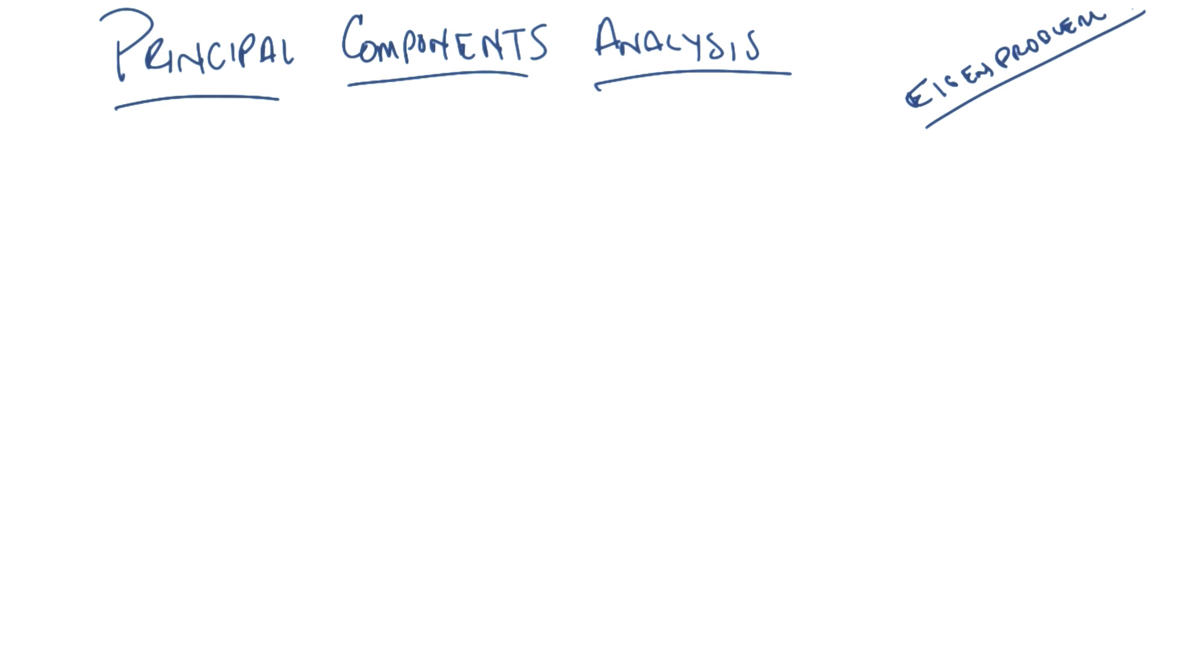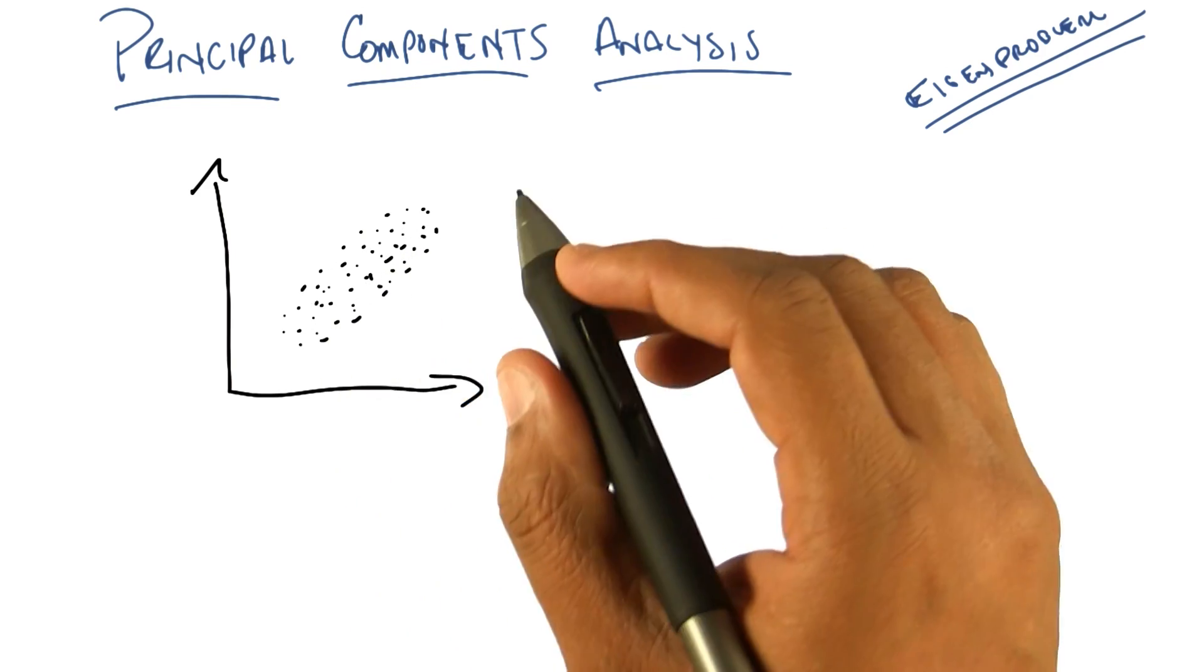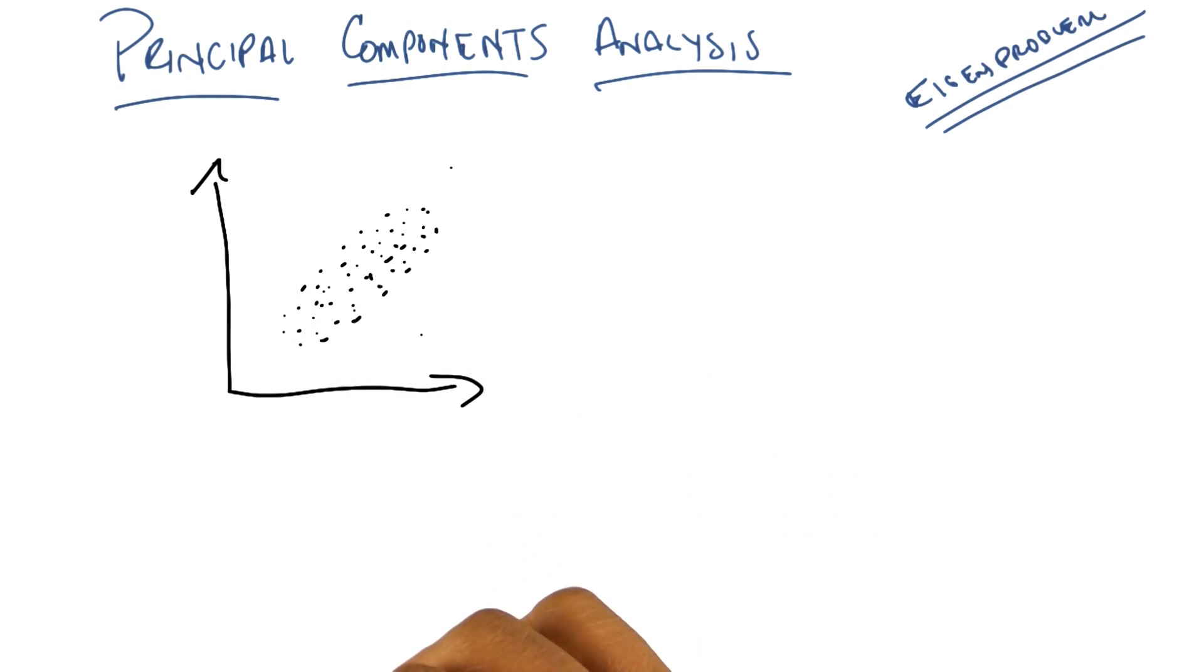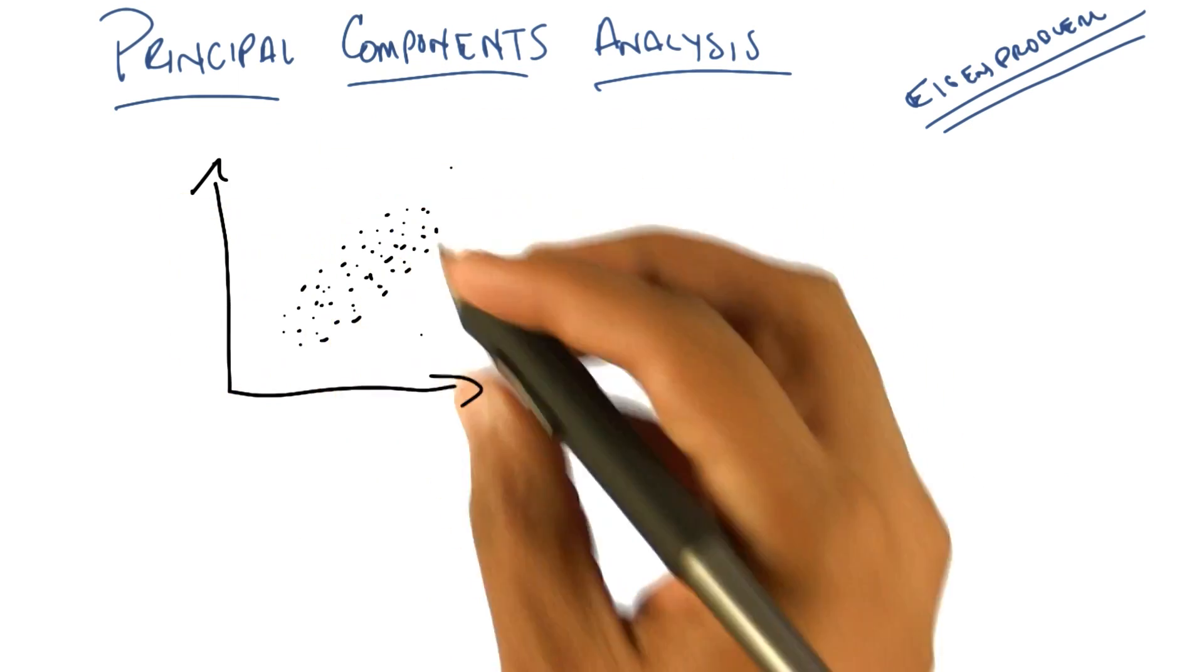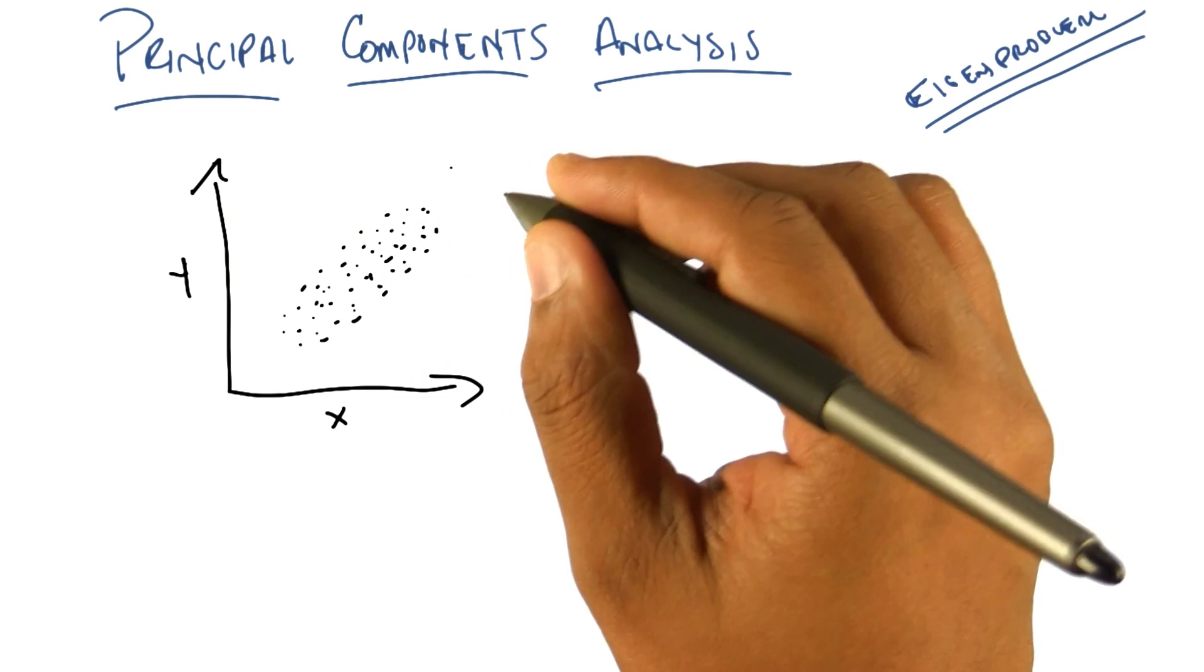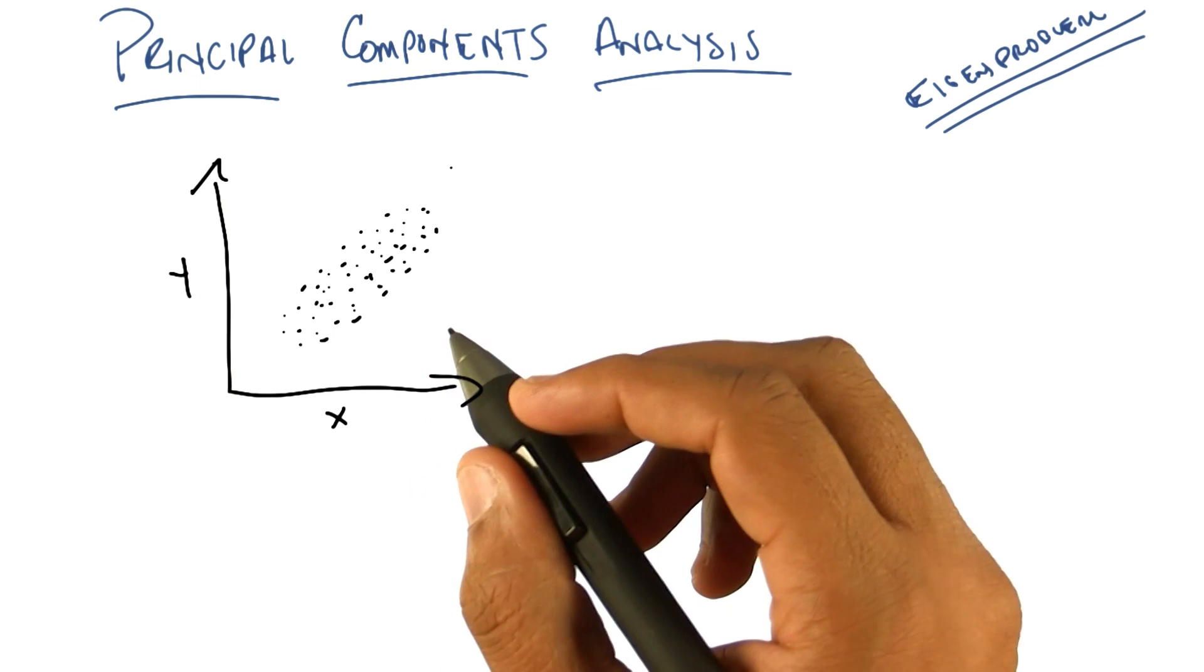And I think the easiest way to do that is with a very simple two-dimensional example. So here's my very simple two-dimensional example. You see this picture, Michael? So this is a bunch of dots sampled from some distribution that happens to lie in a two-dimensional plane like this. Now, this is in fact two dimensions. We have two features here. We'll just call them x and y. We could call them one and two. It doesn't really matter. This is just the xy plane. Let me tell you what principal components analysis actually does.